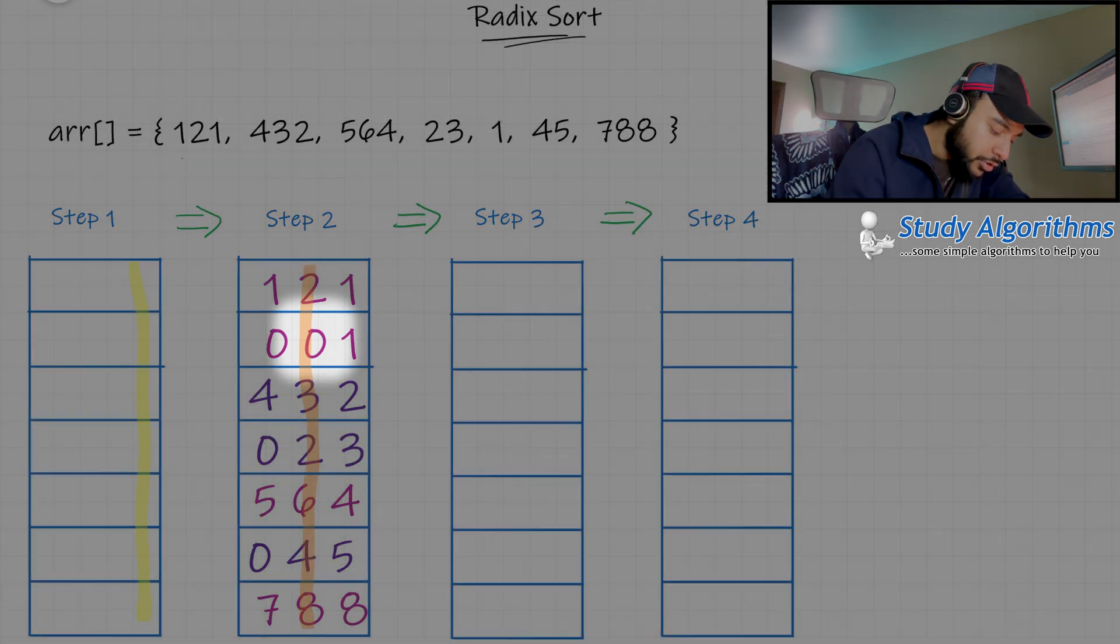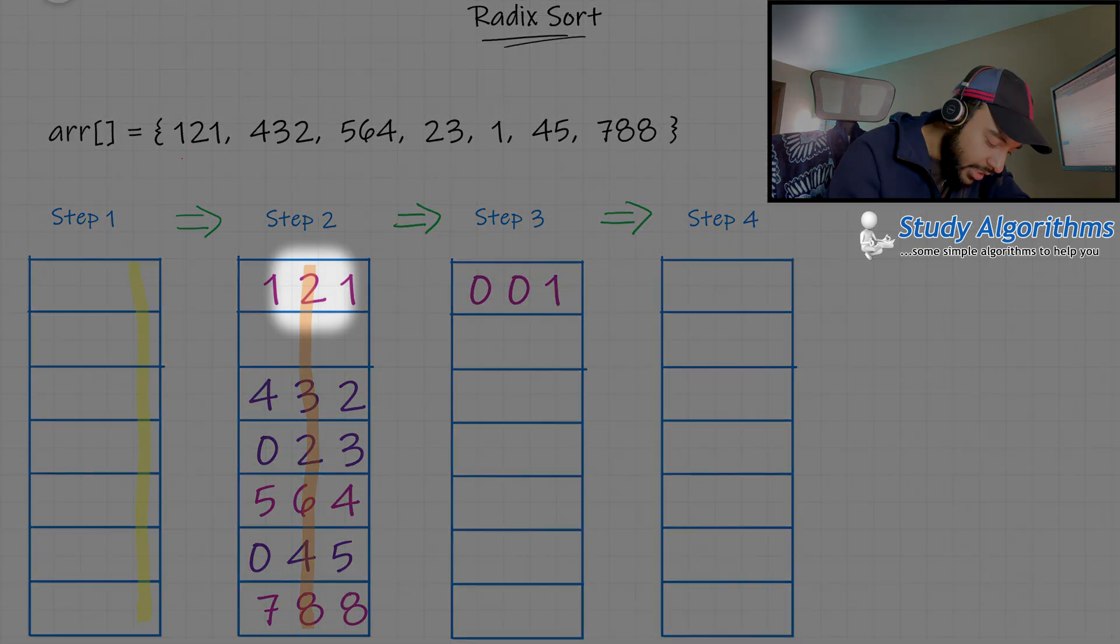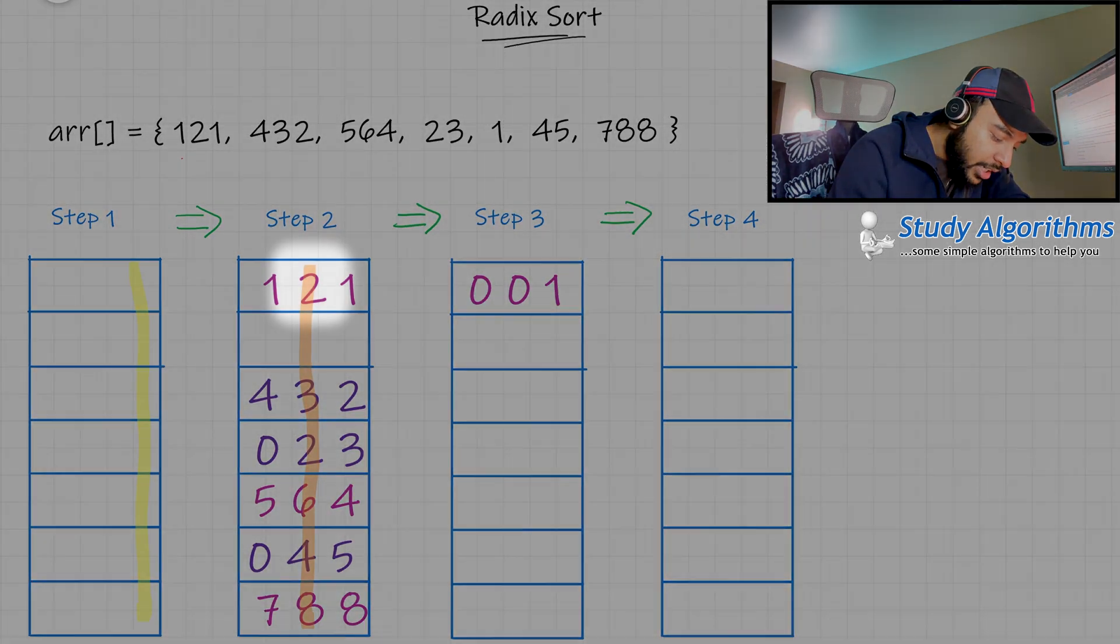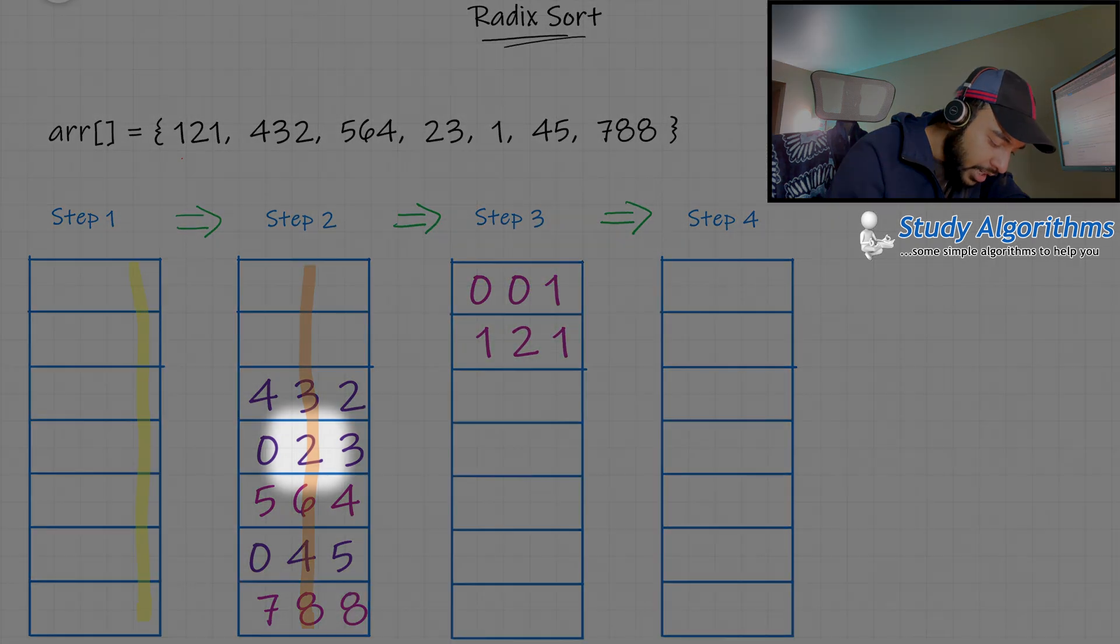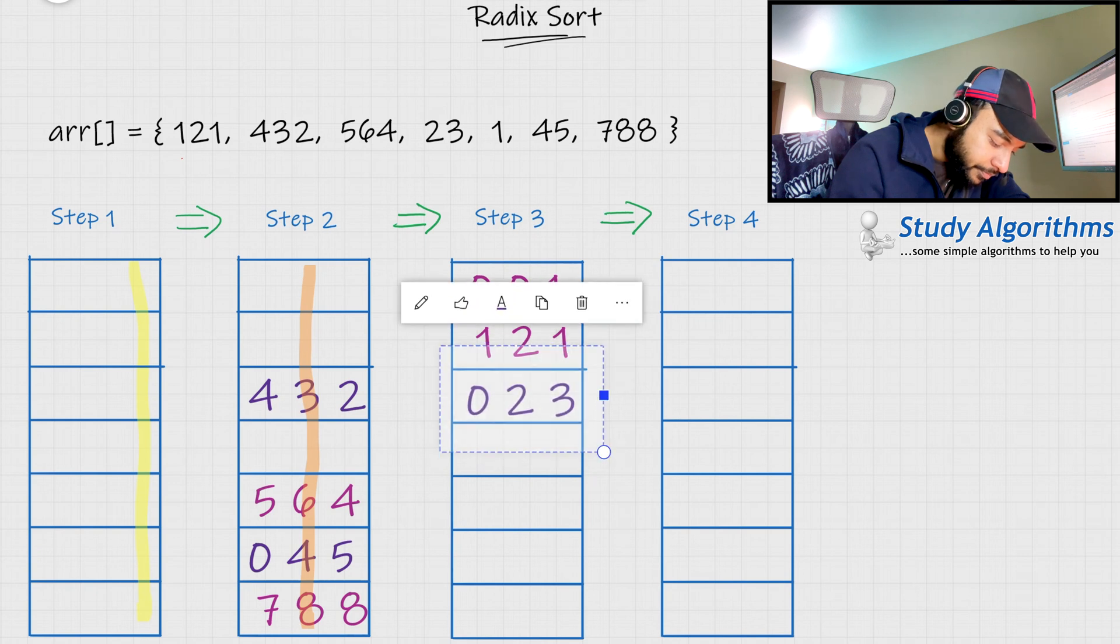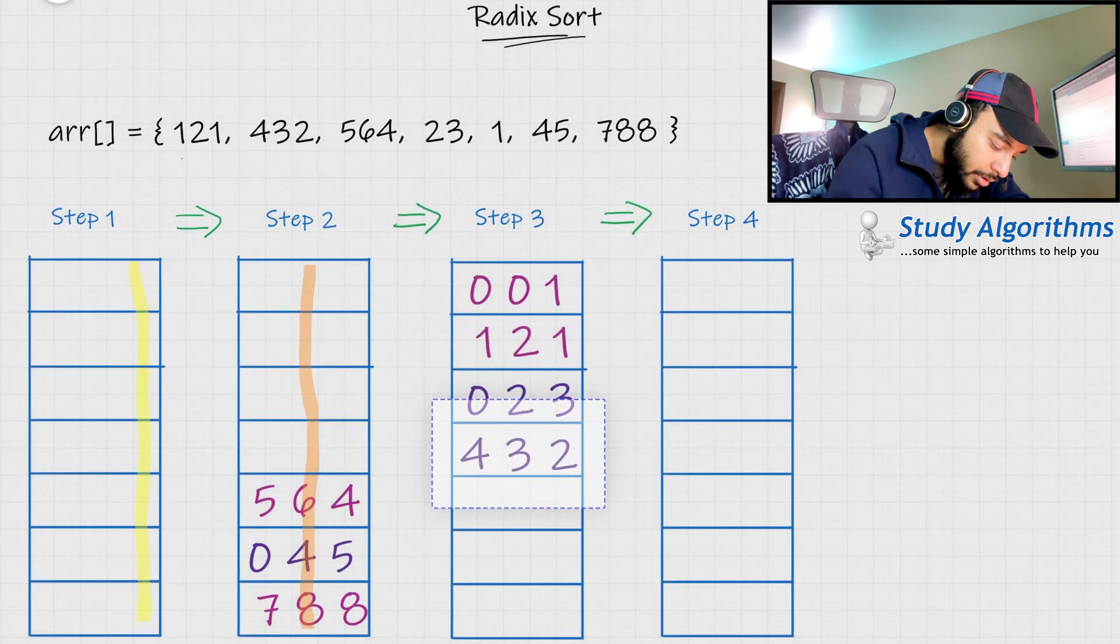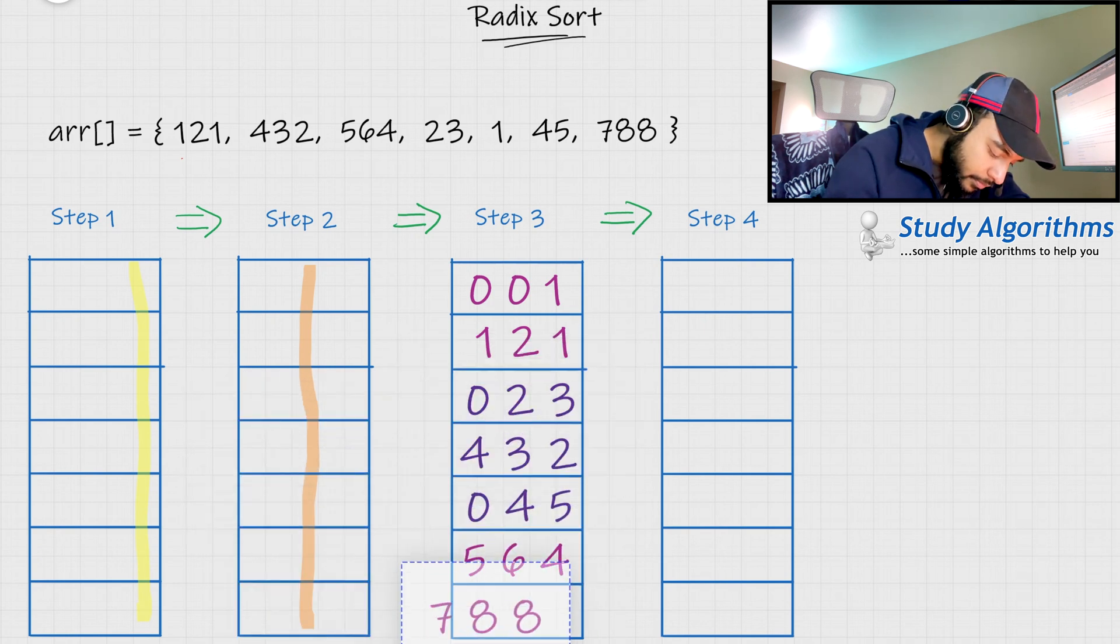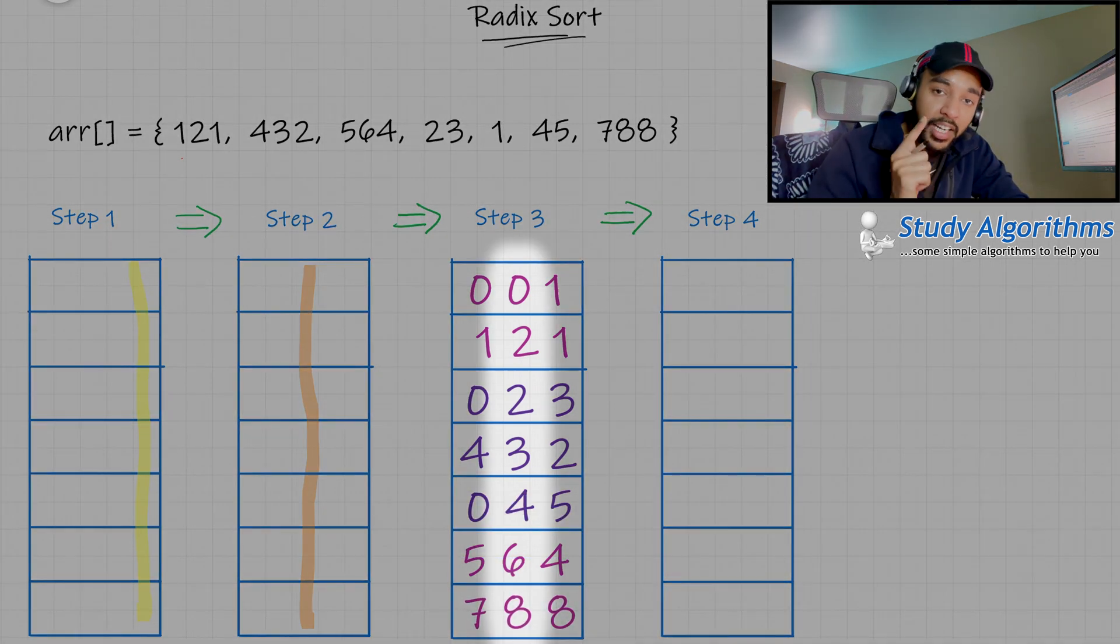You see the number 0. So, let us take up this number and move it to the first position. Then I can't find any 1. I can find the number 2. But you are starting from the beginning. So take up this and move the number over here. You see 2 again. So move 0, 2, 3 over here. Then you find 3, so you move 4, 3, 2. And then similarly, so you see, we sorted all of these numbers using the digit in the tens place.